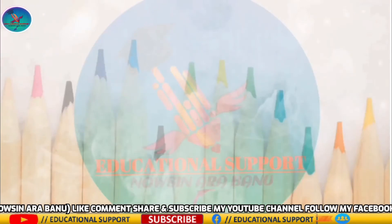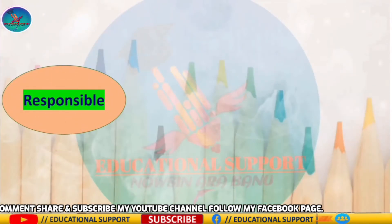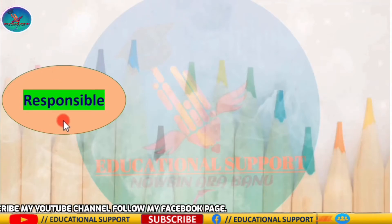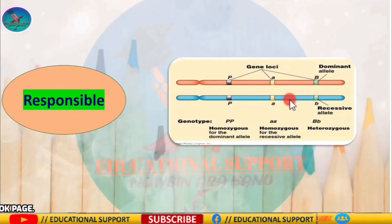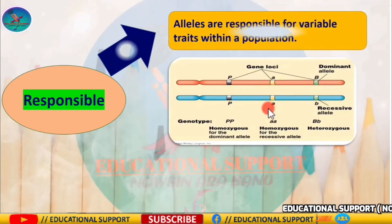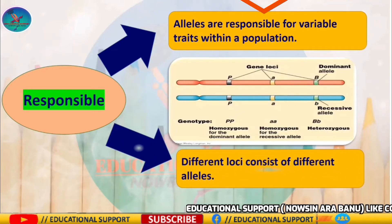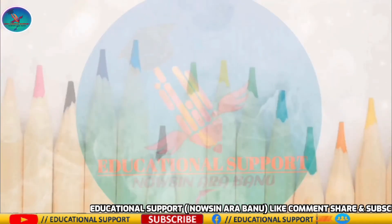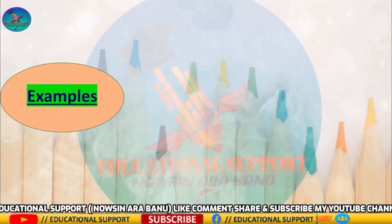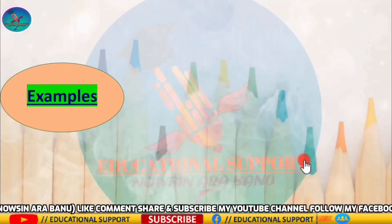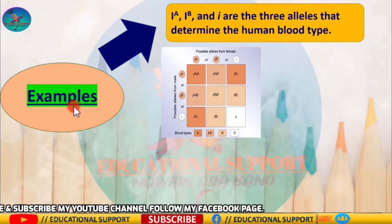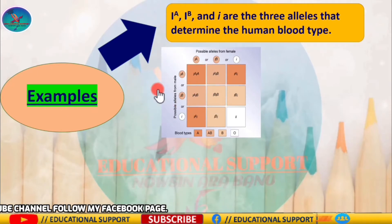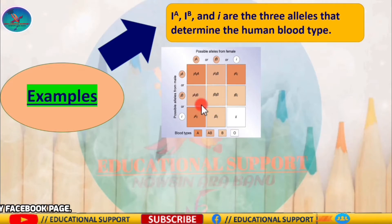Alleles are responsible for variable traits within a population, and different loci consist of different alleles. For example, Ia, Ib, and small i are the three alleles that determine the human blood type.